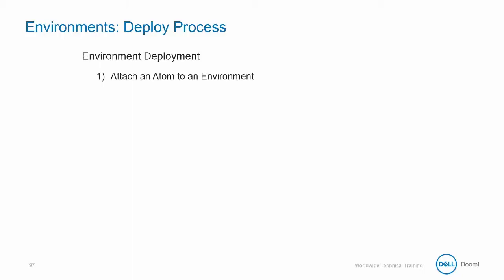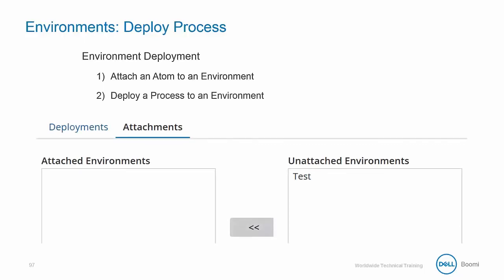Let's review how to attach a process to that same environment. A process can attach to one or more environments via the deploy tab. You can do this by highlighting the process within the process pane. This isn't shown on the screen currently, but the activity guide takes you step-by-step through each of the screens. Once you have chosen the process that you want to deploy, you can click the Attachments tab shown here on the screen.